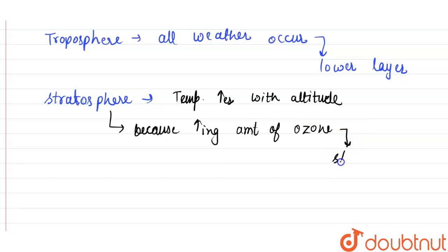The ozone layer is present in the stratosphere. This ozone layer absorbs the harmful UV rays of sunlight.